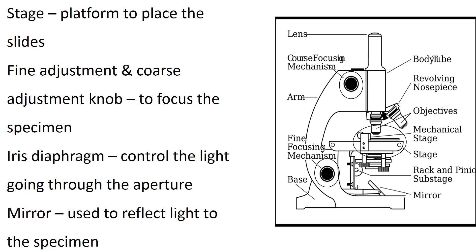While working with high power objective lens, we use fine adjustment knob to focus the specimen. Iris diaphragm controls the light going through the aperture. Mirror is used to reflect light to the specimen.